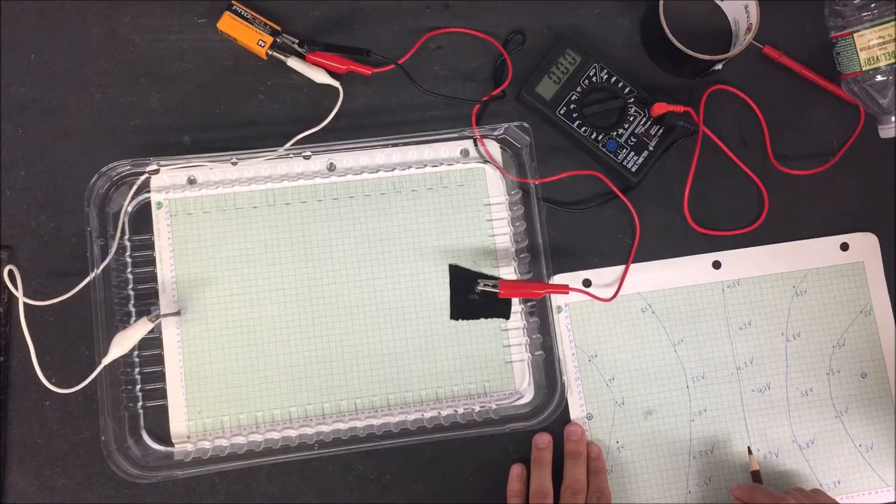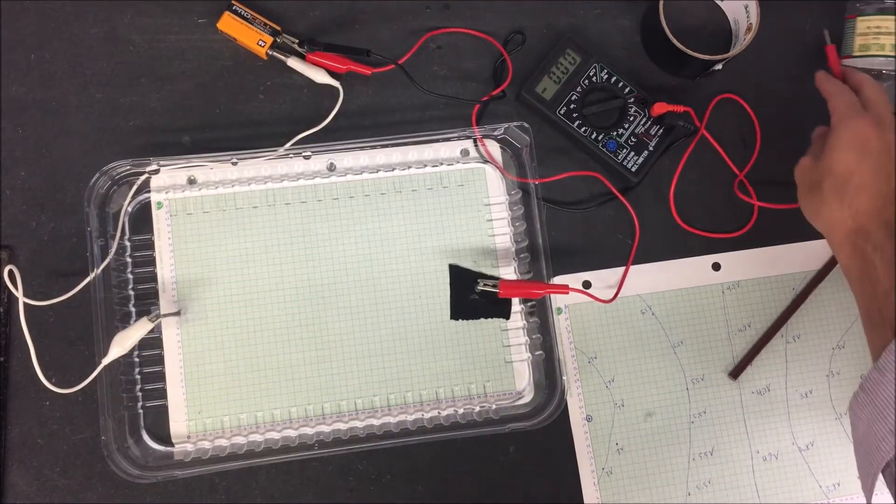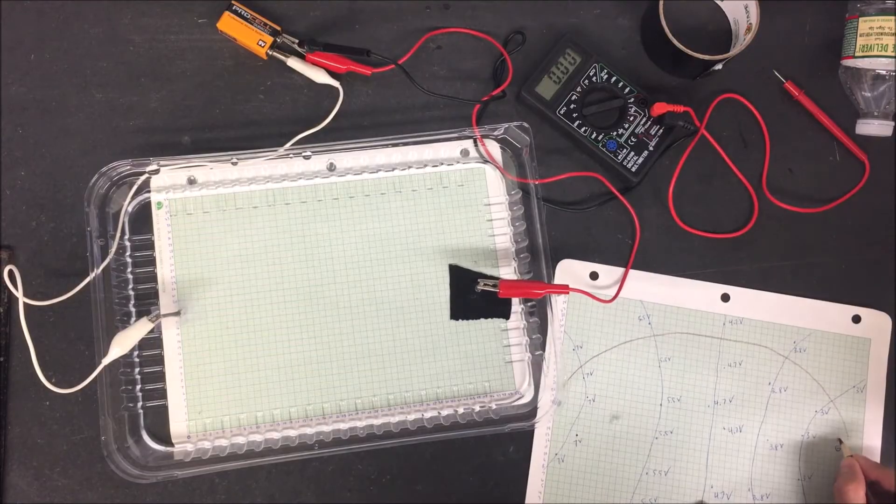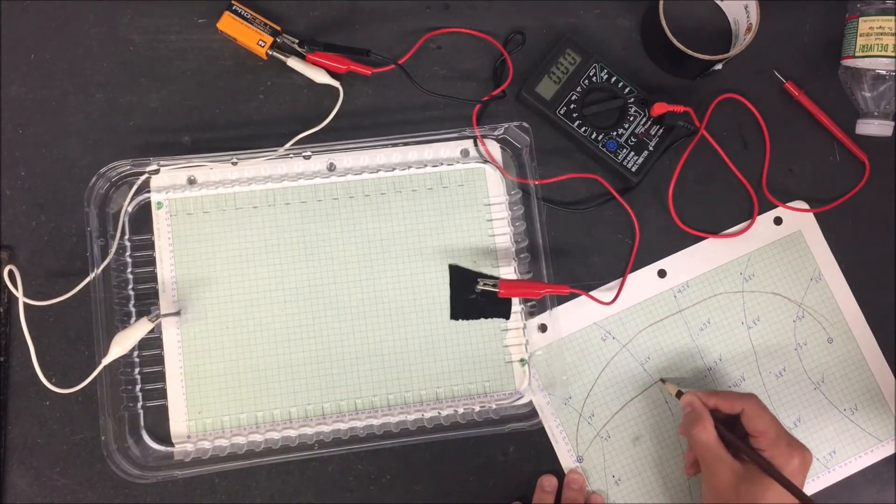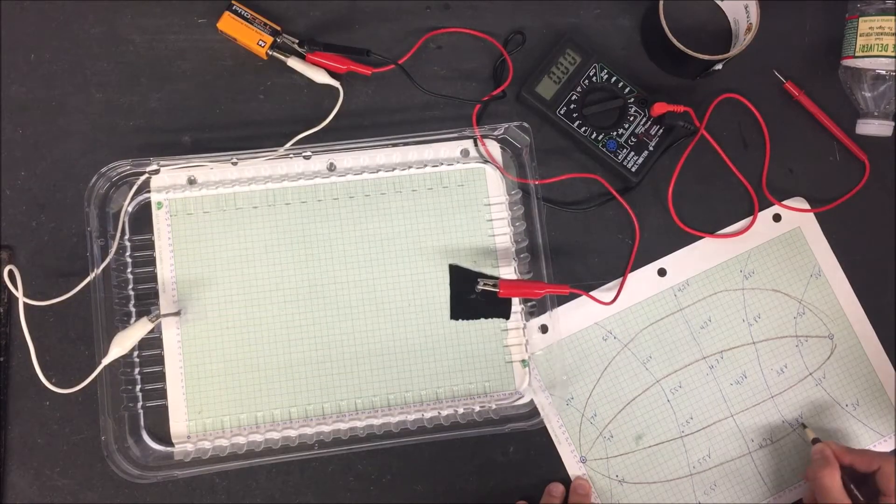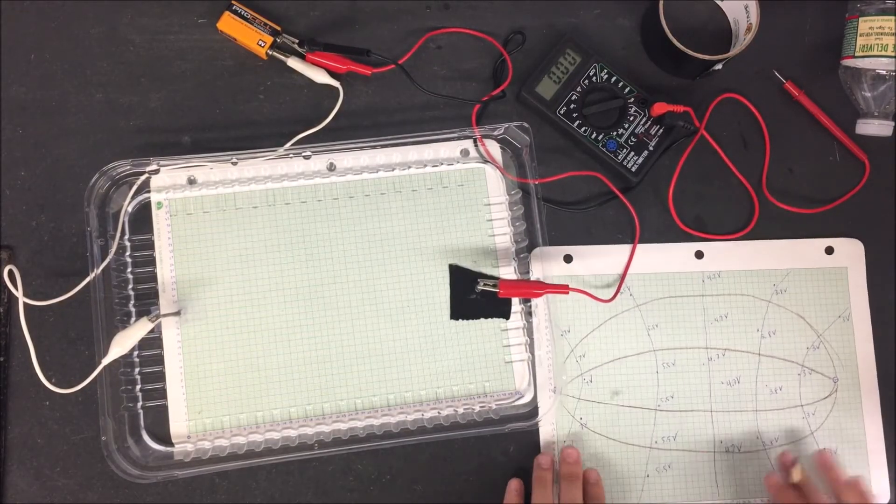And afterwards, you're going to make electric field lines. These electric field lines, you're just going to be roughly drawing them, but they should pretty much be going perpendicular to the lines of the equipotential lines or the lines of the charges.